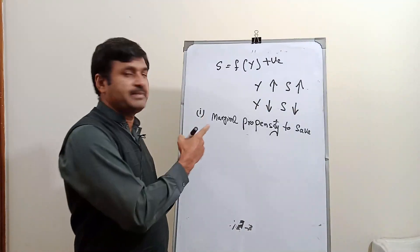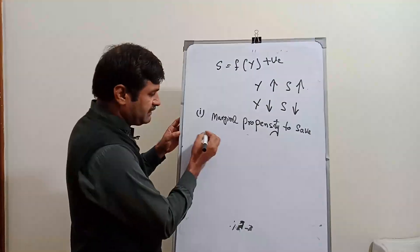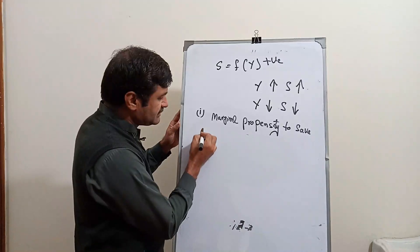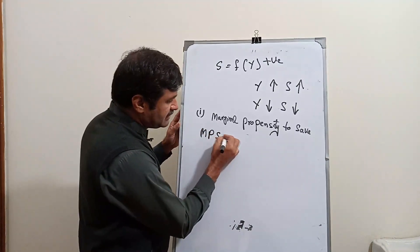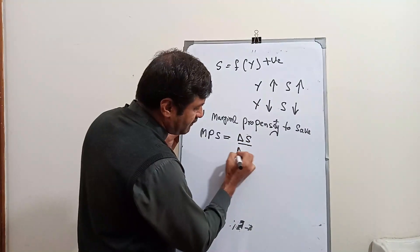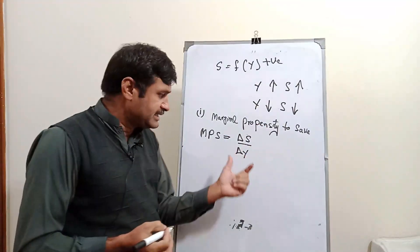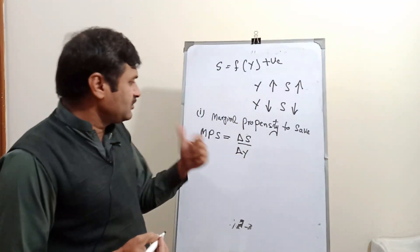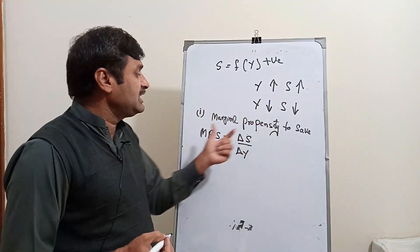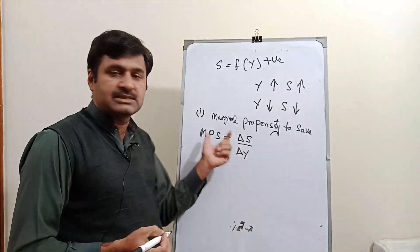The second component is marginal propensity to save. The formula of marginal propensity to save is denoted as MPS, and the formula is MPS = ΔS / ΔY, where ΔS is change in saving and ΔY is change in income. The definition: change in saving due to change in income is called marginal propensity to save.